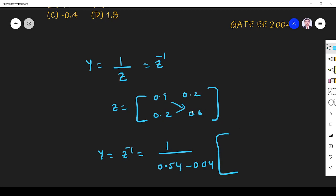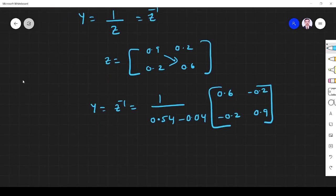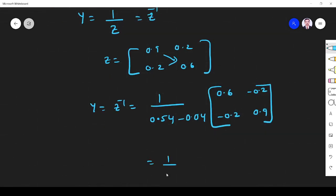Next I have to find this matrix. Change the primary element, primary diagonal element. So it is 0.6, 0.9. Change the sign of secondary diagonal element. So it is minus 0.2, it is minus 0.2. So this is 1 by 0.5. This is 0.54 minus 0.04.